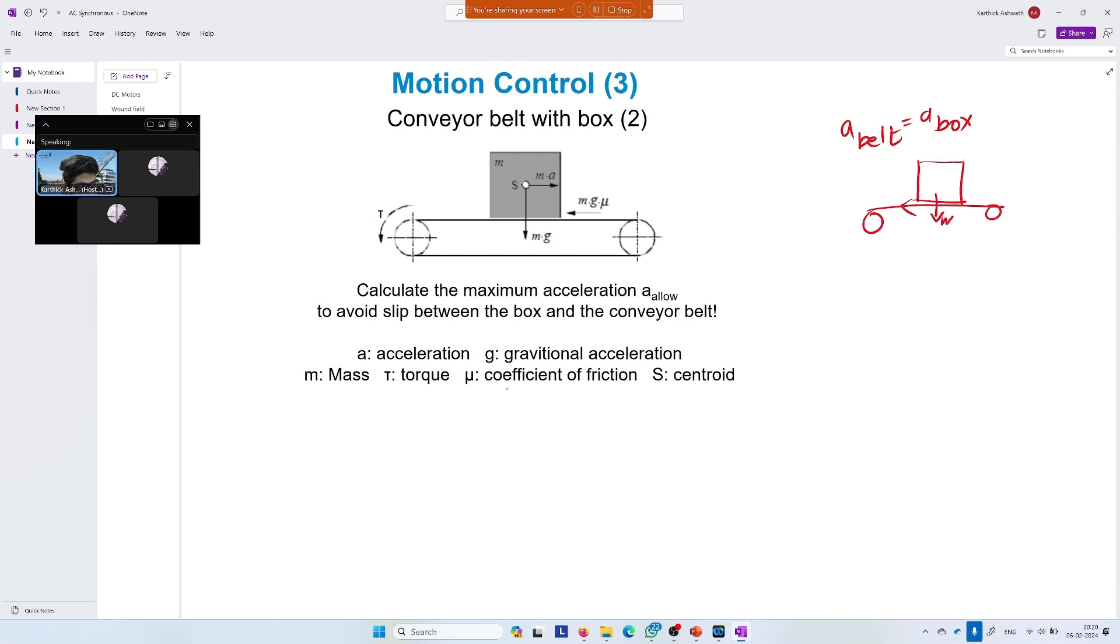Normal reaction is Mg and coefficient of friction is μ. μMg equals Ma, so a equals μg. This is the maximum acceleration the belt can have such that the box doesn't slip. Any acceleration greater than that, the box will start slipping. That's the maximum acceleration allowed so it doesn't slip.